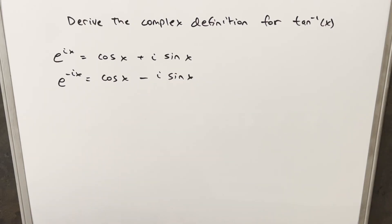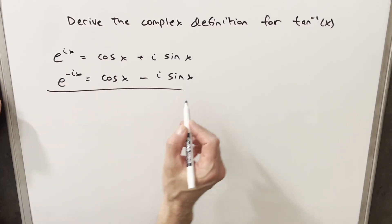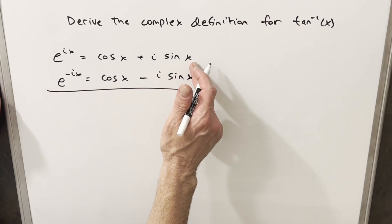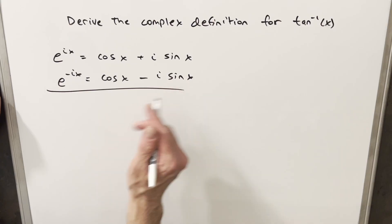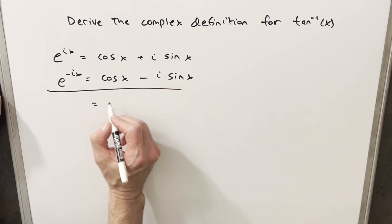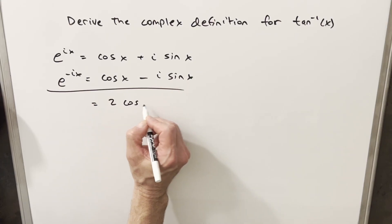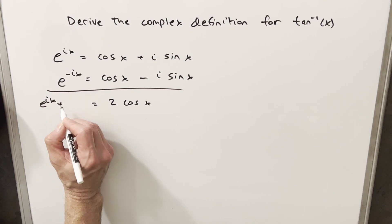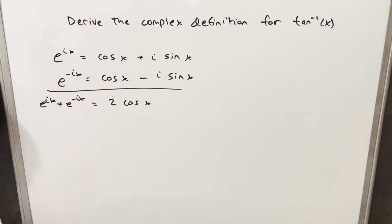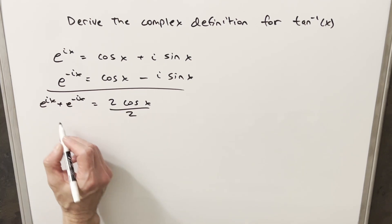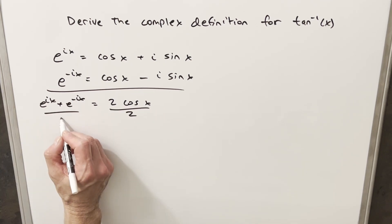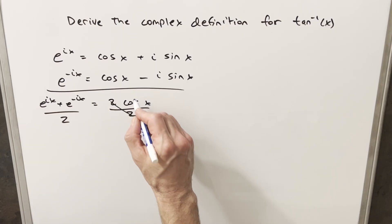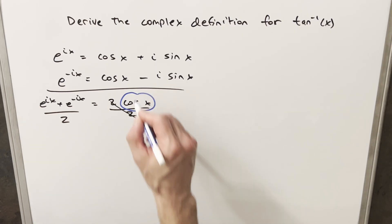Just with this, it's going to help us out quite a bit, because what I can do is add these two equations together. When I do that, the i sine of x terms are going to cancel, and we're just going to end up with 2 cosine x on the right side. Over here we have e^(ix) plus e^(-ix), and I can divide by 2 on both sides — the 2's cancel — and that gives us our complex definition for cosine.